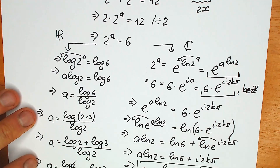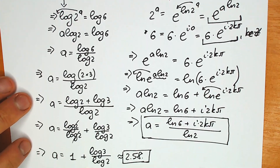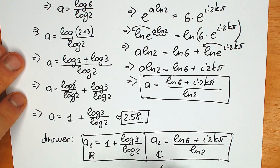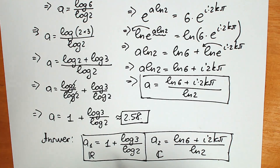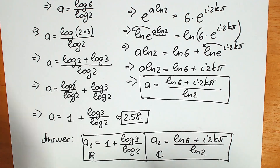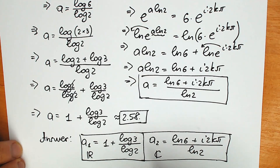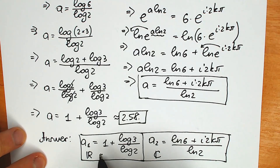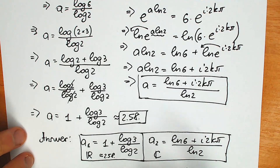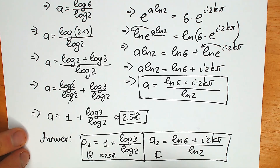This is my solution to the question — a real number root on the left side and a complex root on the right side. Thank you everyone for watching. Write your response in the comments below. What do you think about this question? It's really interesting to see a solution from a different angle. Our answer is approximately 2.58. Thank you everyone for your time. Have a great day, see you in the next videos!